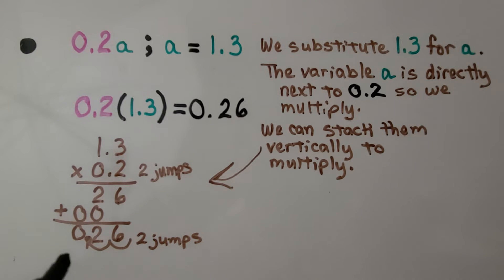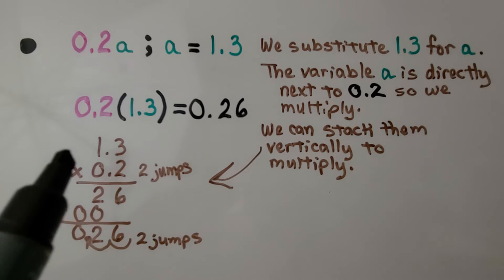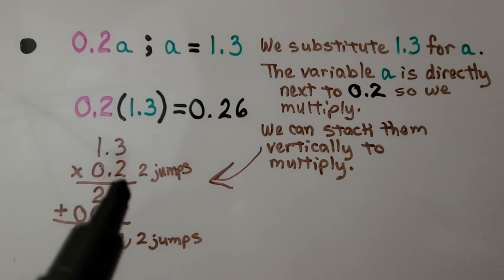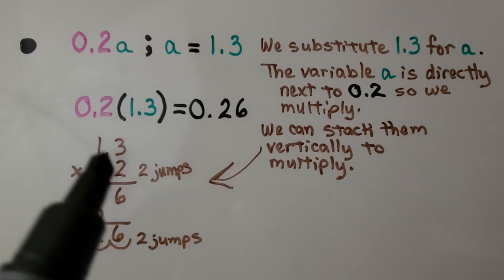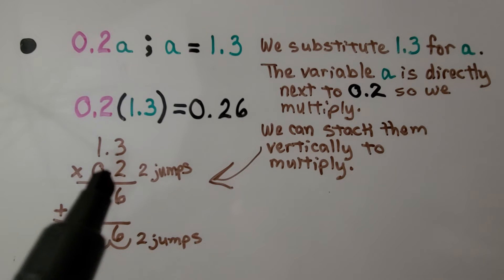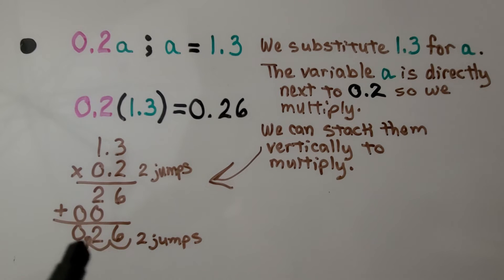And we can stack them vertically to multiply if that will help us. So we do 1 and 3 tenths times 2 tenths, and we get 26 hundredths. Remember, we have 1, 2 jumps in the equation, so there's going to be 2 decimal jumps in the product. We know it's equal to 26 hundredths.